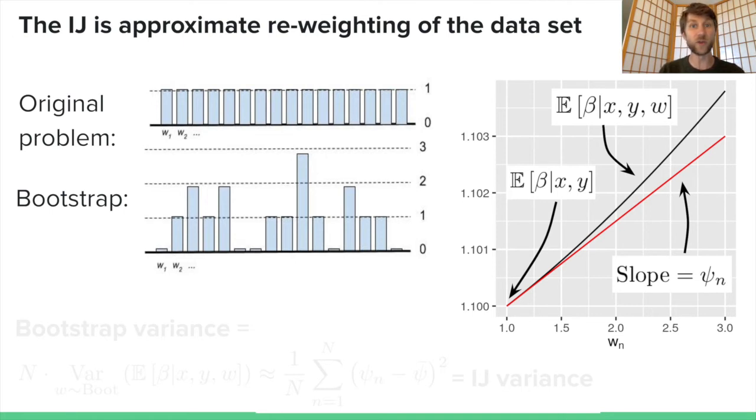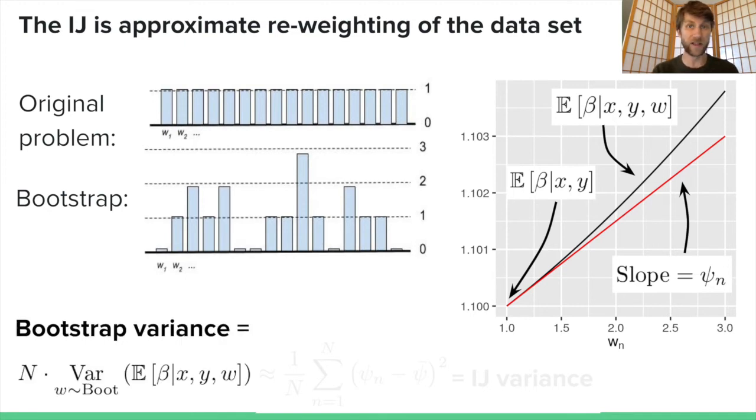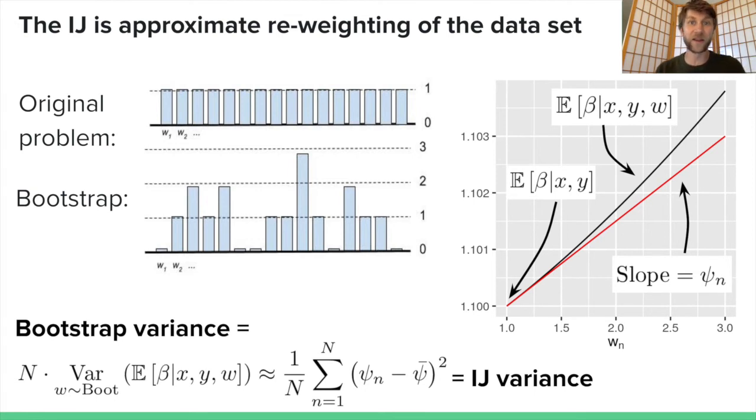They're called the influence scores because this is closely related to the influence function from robust statistics. We can use these weights to represent the bootstrap variance estimate as the variance of this posterior expectation over randomly sampling weights according to the multinomial distribution. That, of course, is computationally intensive. But if we use the influence scores to form a linear approximation to the exact bootstrap and plug it into the sample variance, what we get is exactly the sample variance of the influence scores, which is the IJ covariance estimate. This is why you can think of the IJ covariance estimate essentially as a linear approximation to the exact bootstrap. It's called the infinitesimal jackknife because it was originally motivated as a linear approximation to the jackknife estimator of the variance, which is just a different nonparametric estimator. But the reasoning is essentially the same.